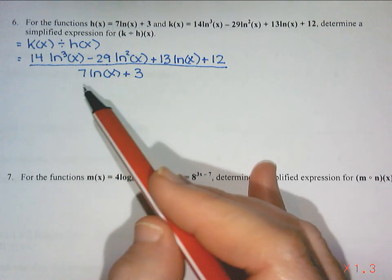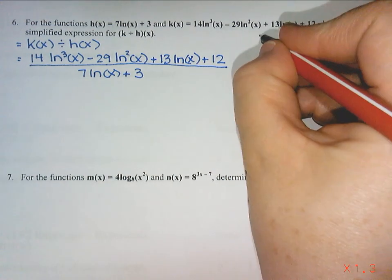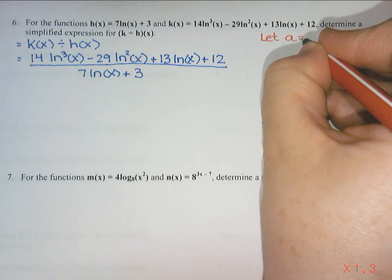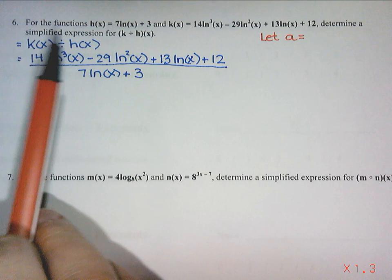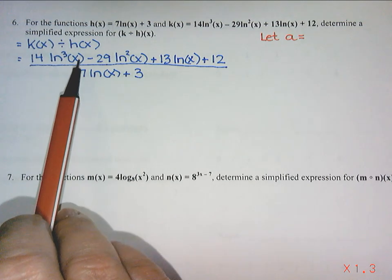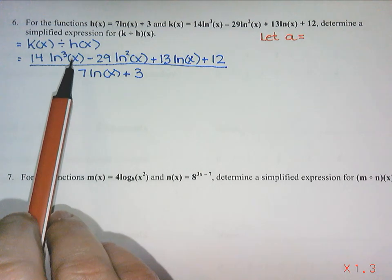I think this would be an excellent candidate for variable replacement. So when I'm trying to pick the thing that I want to put a or b or whatever letter in for, I'm not looking at the exponents. I'm just looking at the log, the base, and the argument. So ln is log base e, and the argument is x.